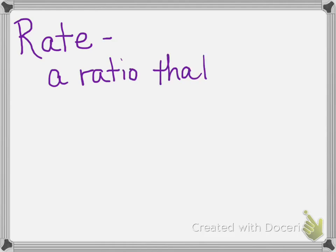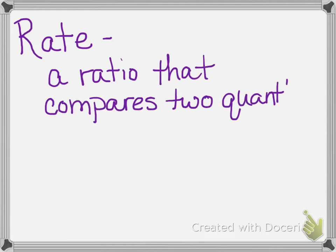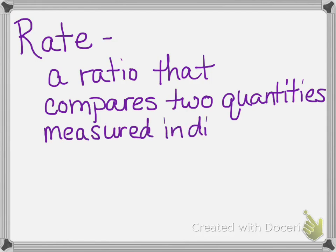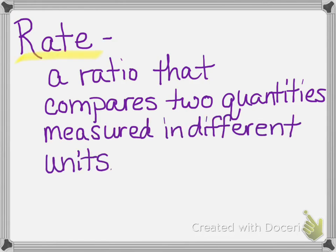First, let's get the definition of rate into our notebook. A rate is a ratio that compares two quantities that are measured in different units. We've already talked about ratios — a ratio is just a fraction that compares two things. The difference with a rate is that the two things are measured in different units. So instead of comparing inches to inches, we might be comparing inches to years, miles to hours, or dollars per day.